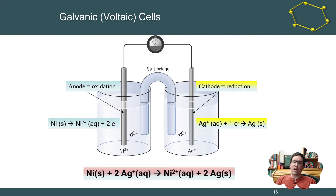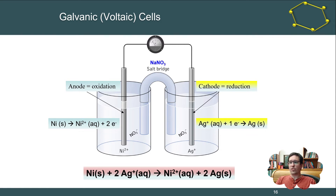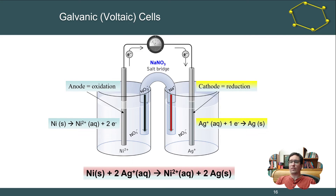We also need a balancing ion — we can't have a situation where we just have positive charge building up. There needs to be some other electrolyte in solution; in this case it's nitrate, which balances the charge from both silver and nickel and is conveniently soluble. The composition of the salt bridge is a solution of sodium nitrate, which allows charge balance to be maintained on both sides.